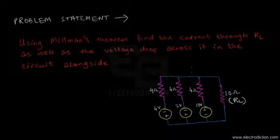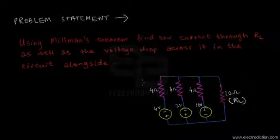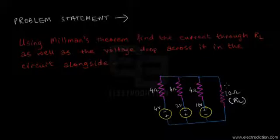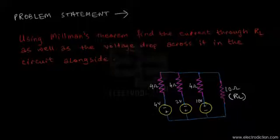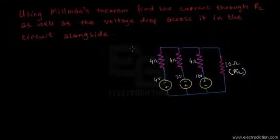Here's our circuit. We need to find the current flowing through RL as well as the voltage drop that occurs across it using Millman's theorem. What we are going to do is reduce this entire network using Millman's theorem, then find the necessary quantities. Let's go forward and do it.